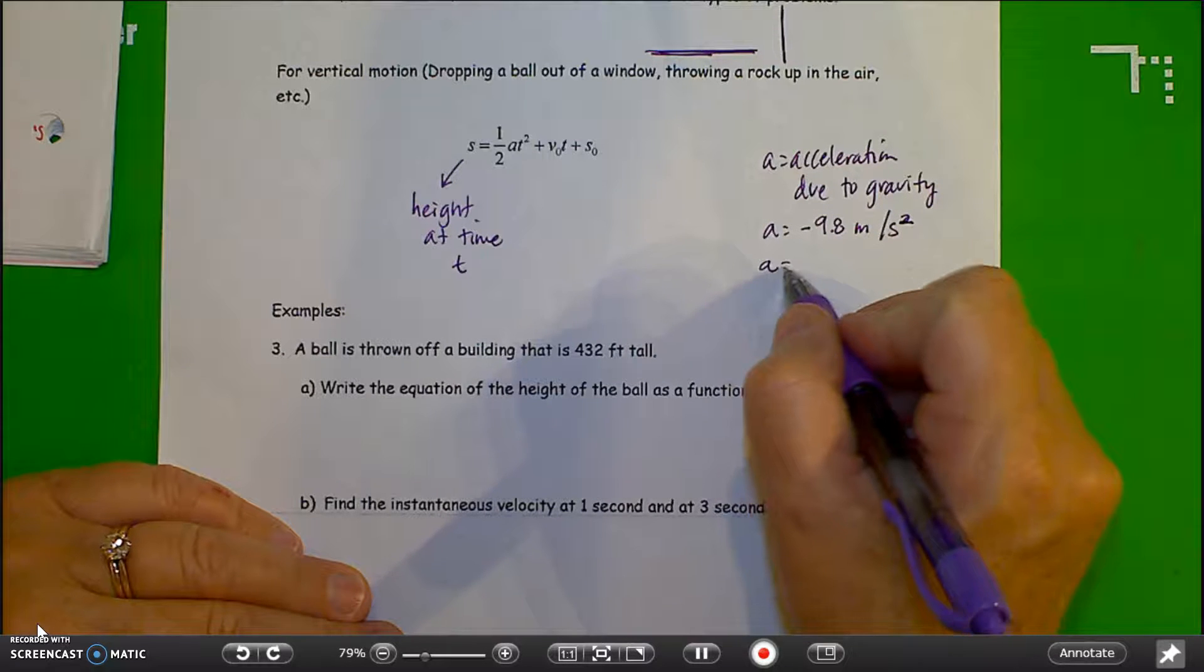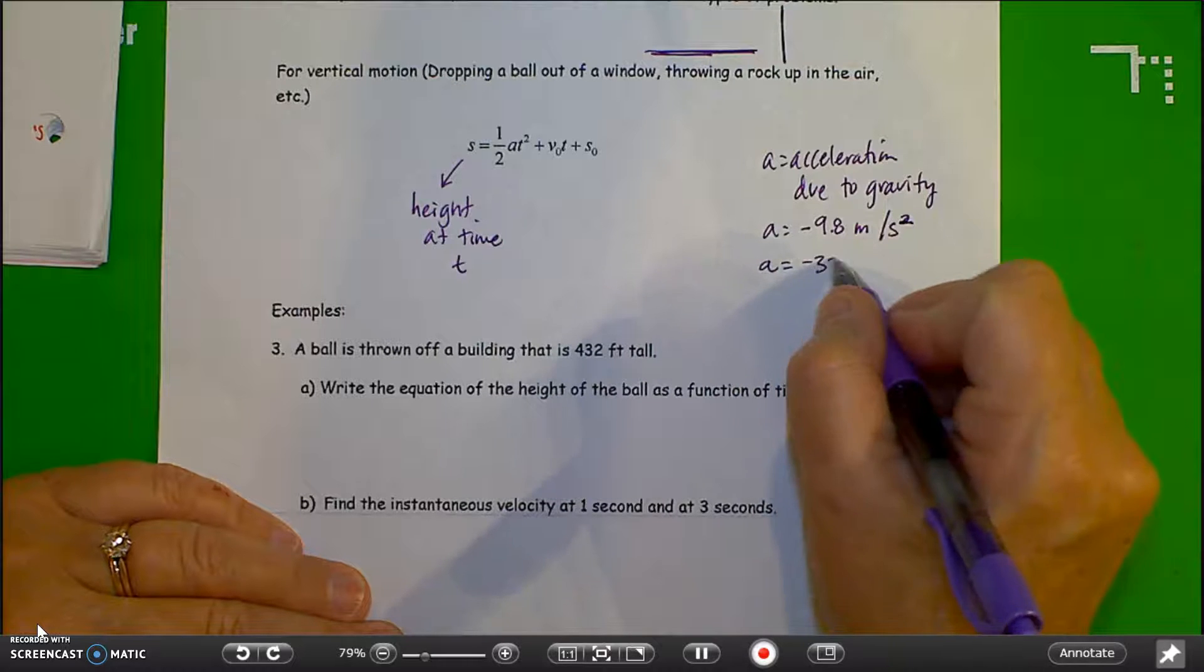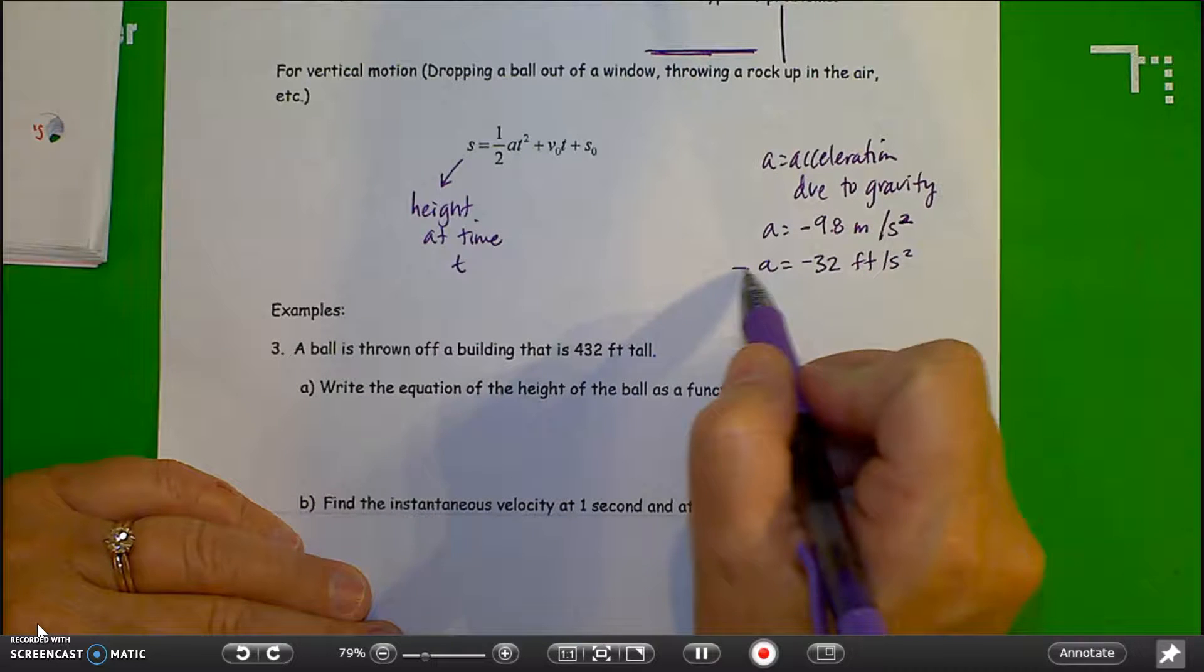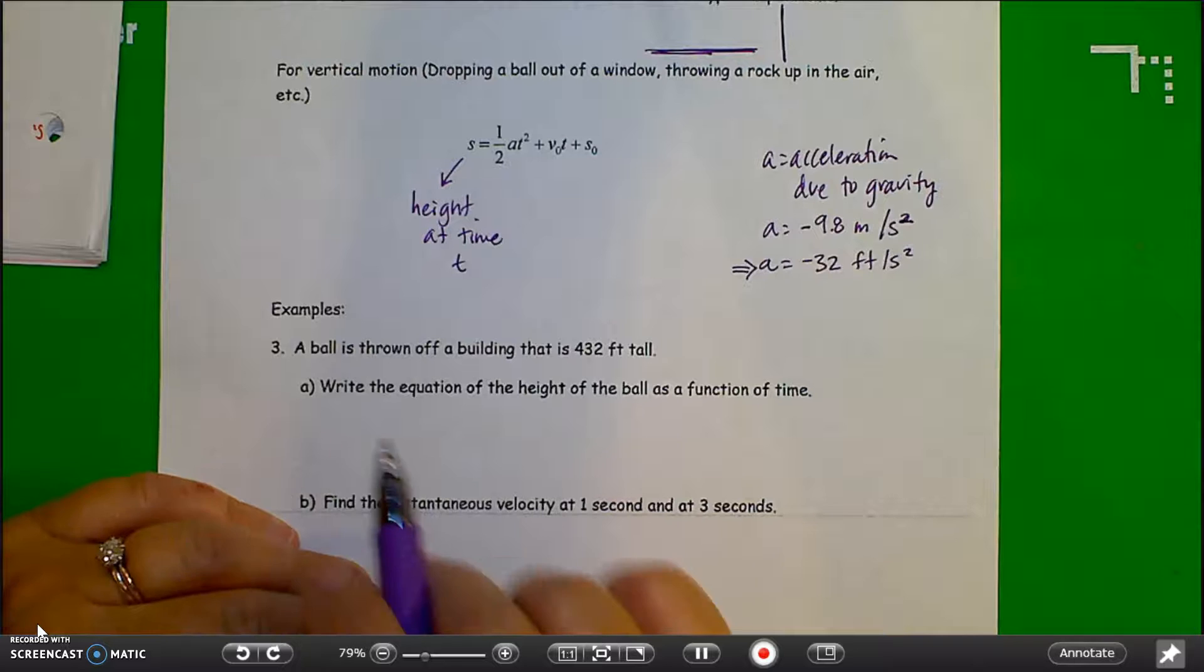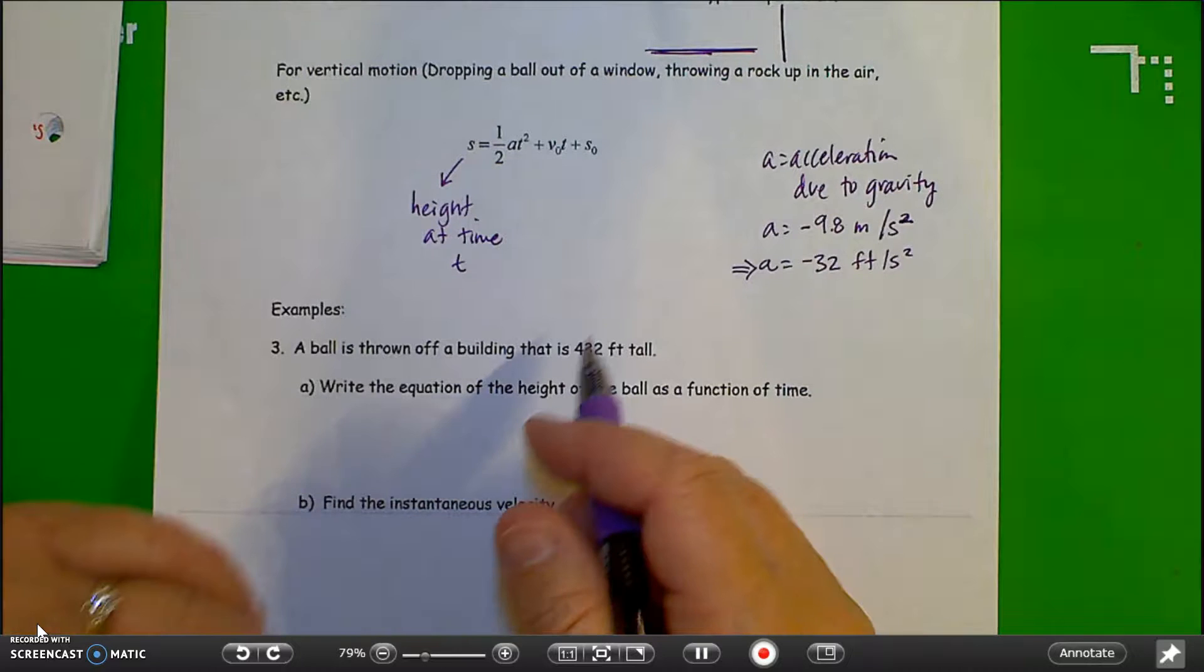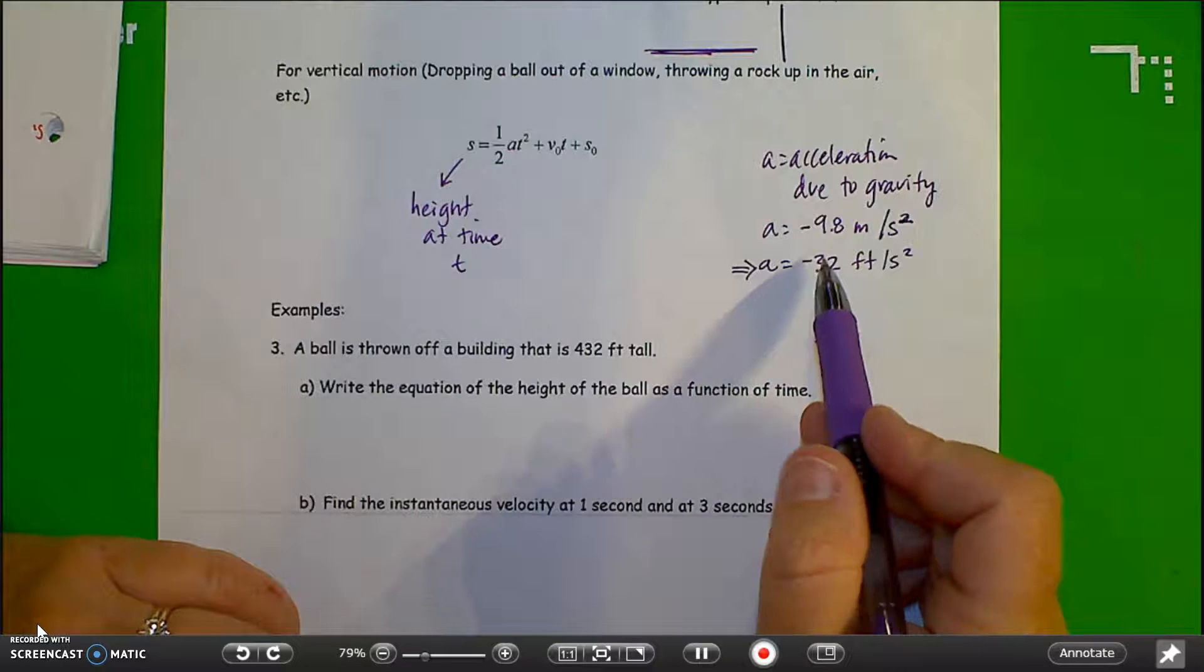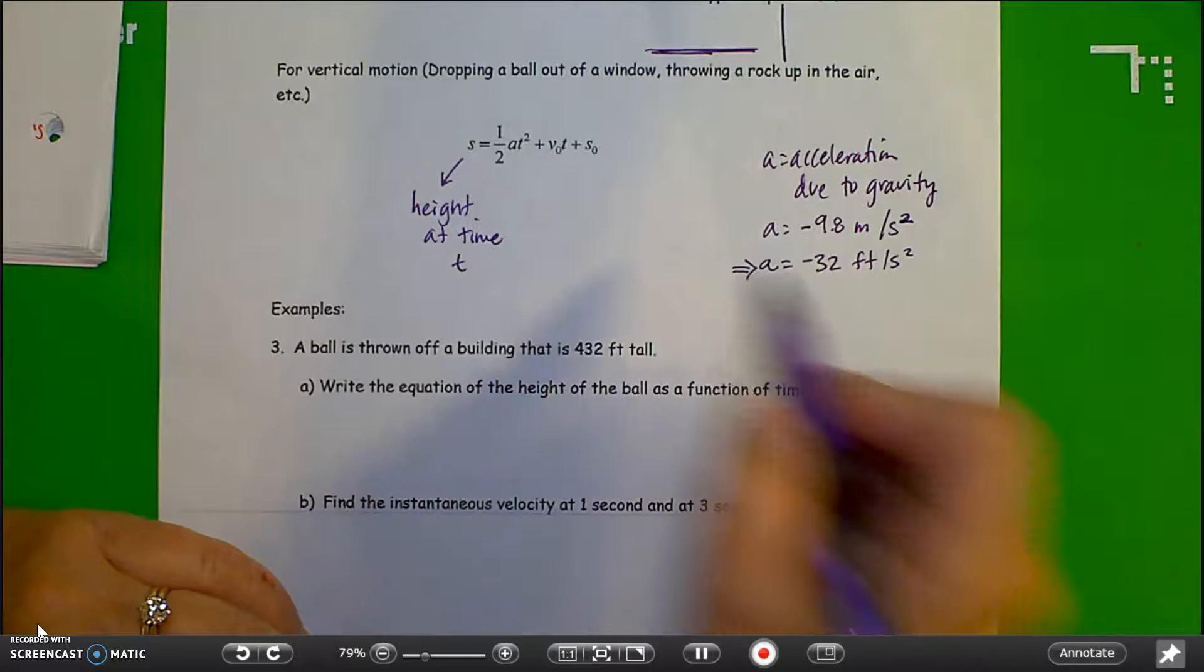And English units, negative 32 feet per second squared. Now a lot of times that's what we're going to use in here, so you need to pay attention to what units of measure are given in the problem. If it's feet in the problem, then obviously we need to use this one. If it's meters, you can use that one. Just be sure to pay attention to what it is.